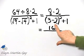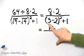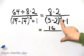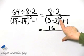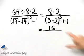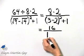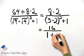3 minus 2 is 1. And what is 1 squared? 1 squared, that's 1 times 1, is 1. And then I still have plus 1.